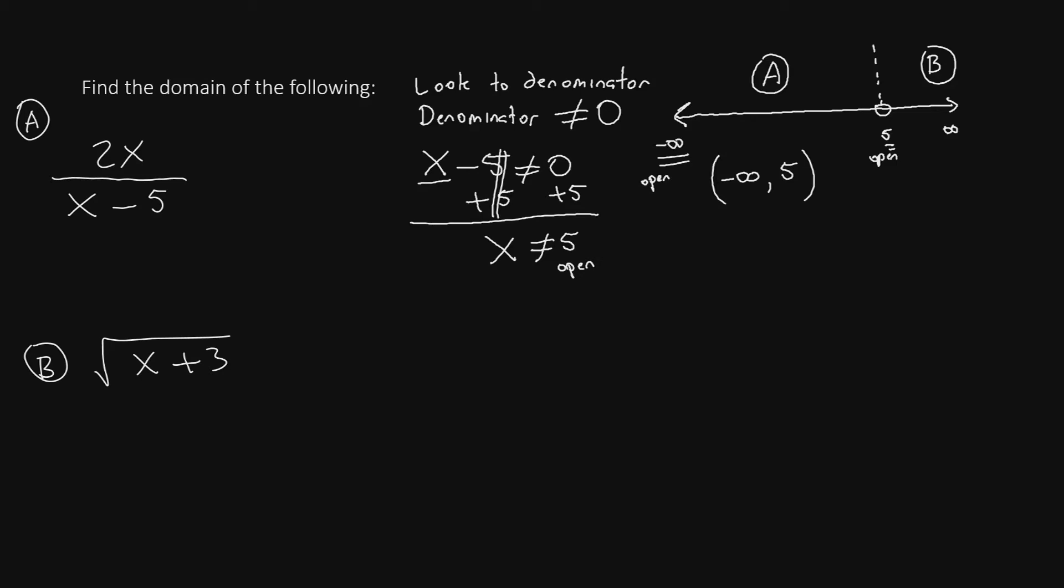Now, we can move to piece B. Piece B stretches on the left from the 5 over to the right, which would be infinity. Infinity is always parentheses, and since the 5 is open, we place parentheses there as well. To symbolize that these pieces are linked together, we place a little U in the middle, meaning union. So, our domain for part A would be negative infinity to 5, union 5 to infinity.